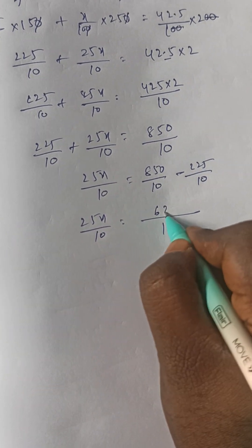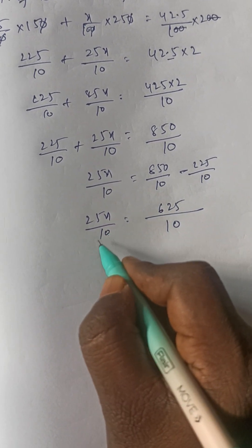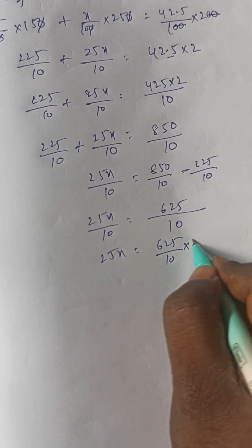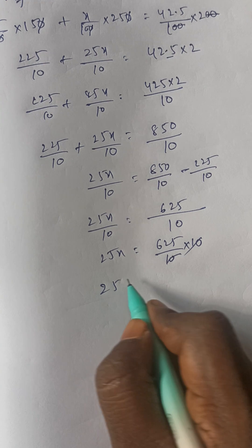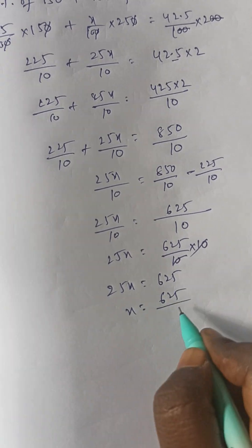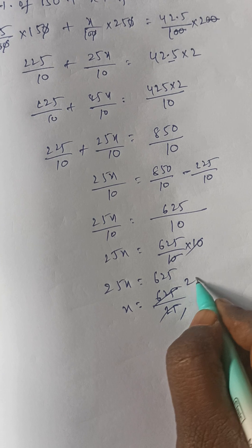The 10 in the denominator goes and multiplies on the other side. So 25x is equal to 625 by 10 into 10. The 10s cancel. 25x is equal to 625. x is equal to 625 by 25. 25 goes one time into 25, one time into so, so x equals 25.